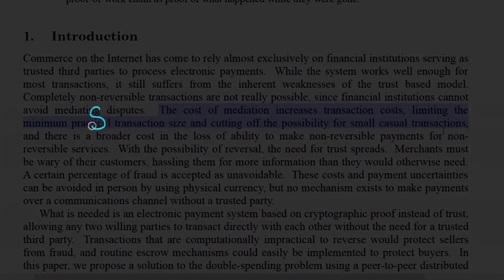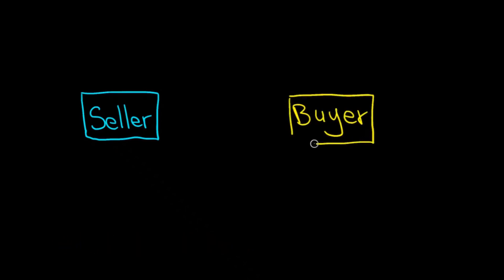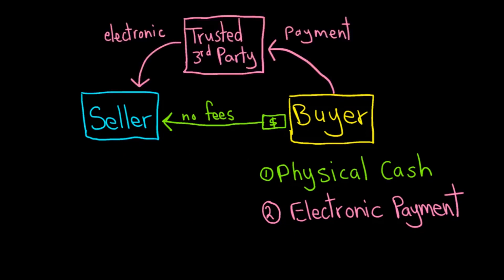I want to draw your attention to a very important point. Let's go back to our scene with the buyer and the seller. Remember that the buyer has two options for payments: physical cash and electronic payment. Note that if the buyer pays with physical cash, then a trusted third party doesn't come into the picture, because there is no double spending problem with physical cash. When you pay cash in a store, you hand it directly to the store owner — no intermediary is needed, and no extra fees arise. The trusted third party only comes into the picture when the buyer makes electronic payments, because of the double spending problem — it's very easy to duplicate digital cash.